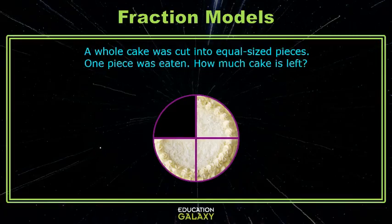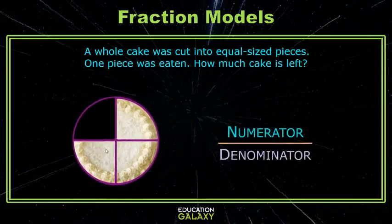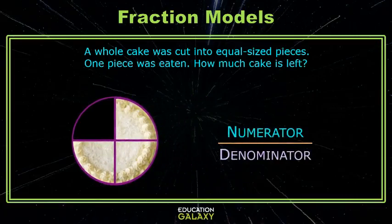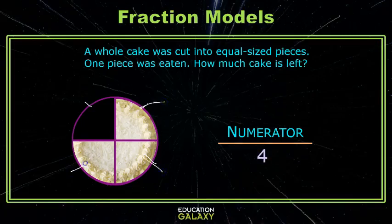Well, we know we need a numerator and a denominator. The denominator is the number of parts we're cut into, which is one, two, three, four parts. The numerator is the question: how much cake is left? How many pieces? One piece? Two piece? Three piece? Three-fourths of the cake is left.